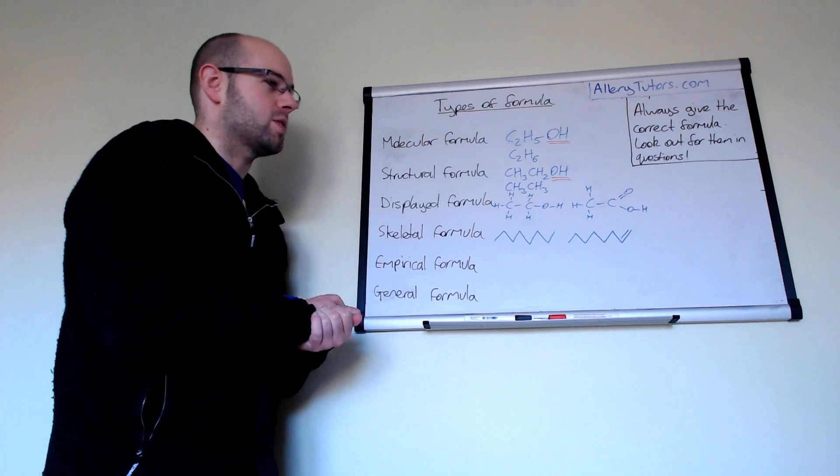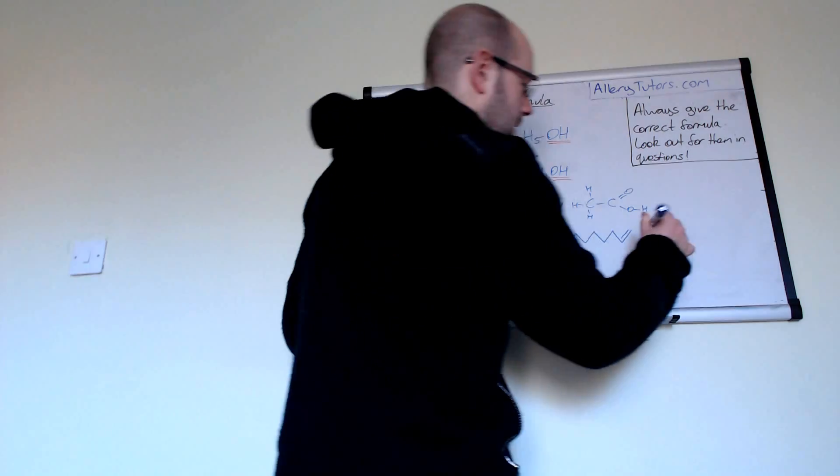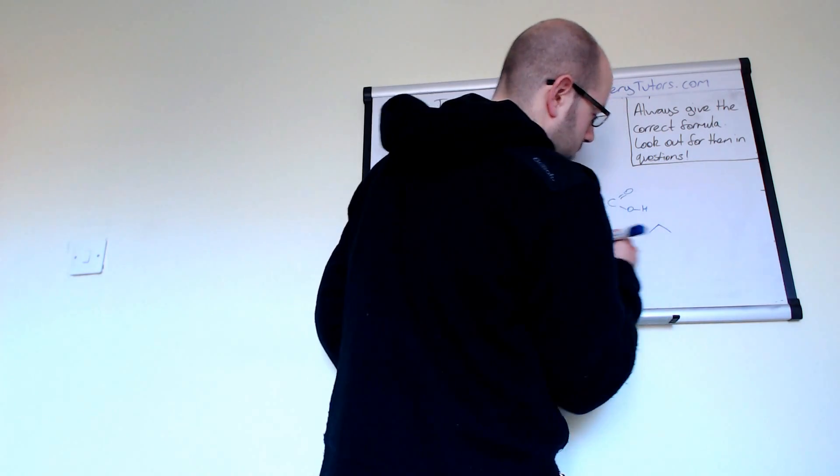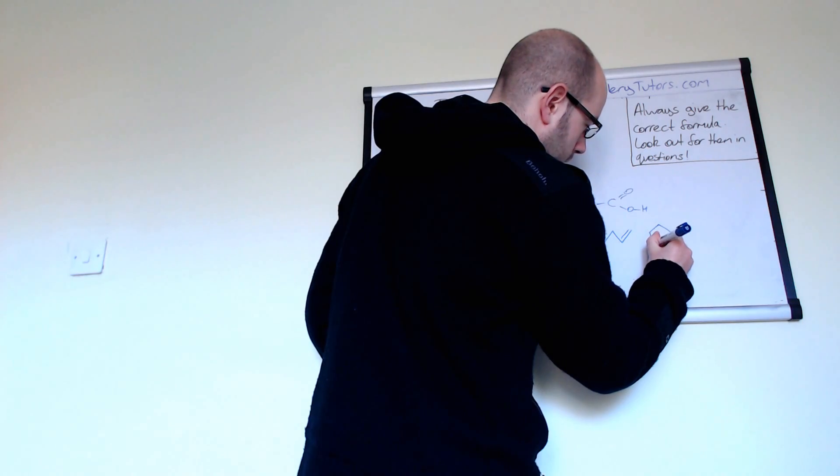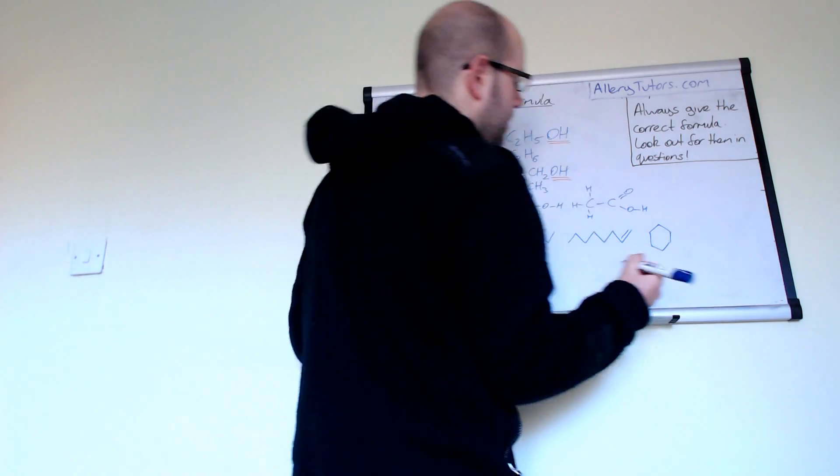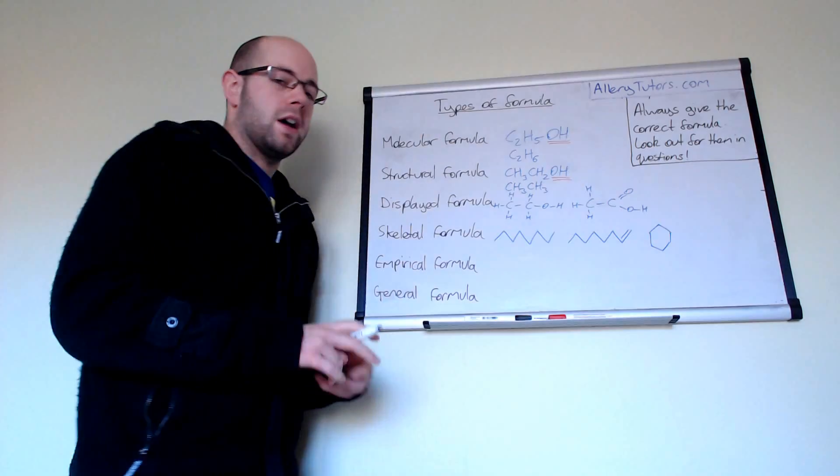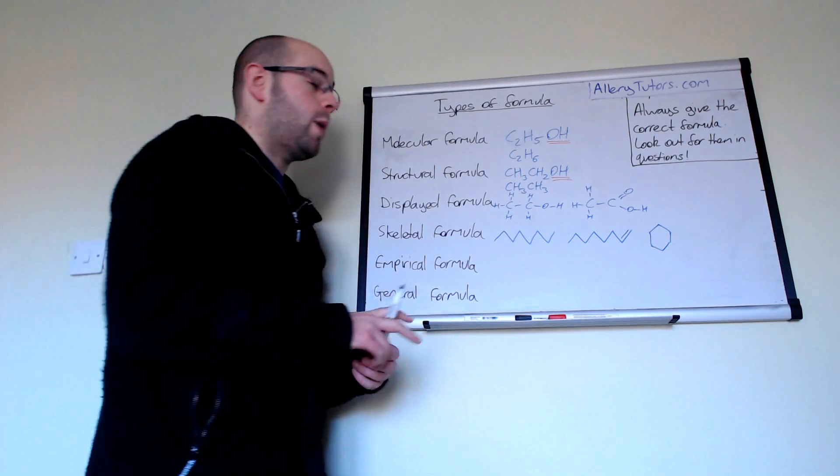They're also very useful for cyclic compounds as well. For example if you were going to draw cyclohexane, cyclohexane has got six points on it so you just draw a hexagon, so you draw one two three four five and then six carbons.